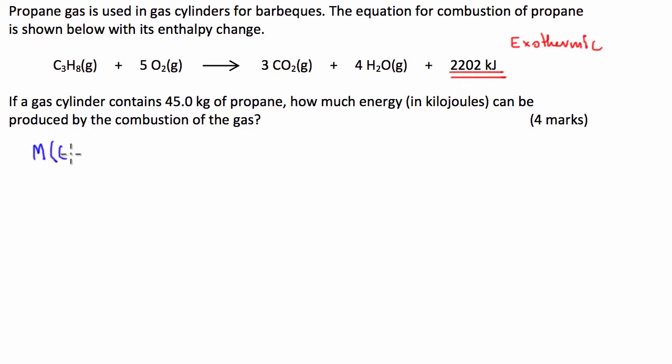So the molar mass of C3H8 is equal to... We've got carbon, which is 12.01, and we're going to multiply that by 3. To that, we're going to be adding hydrogen, which is 1.008.